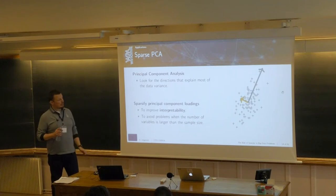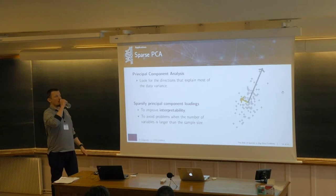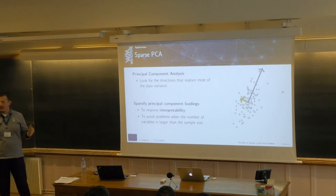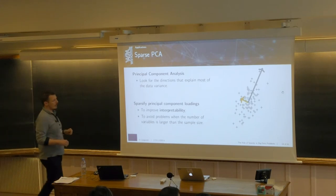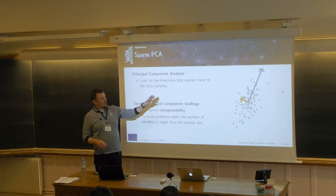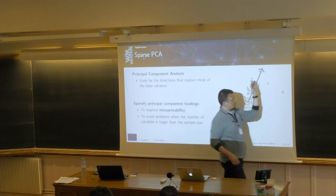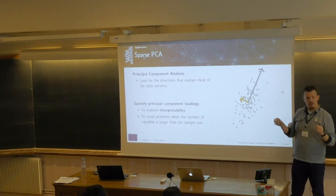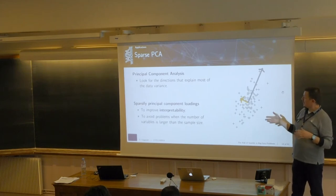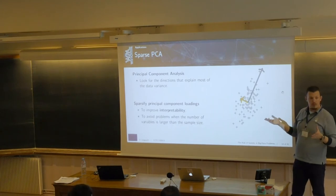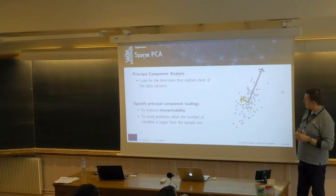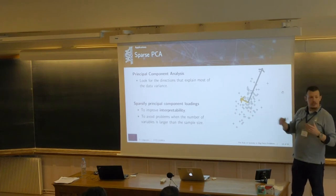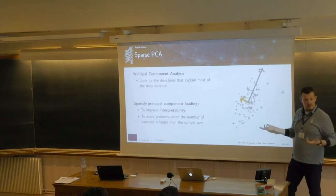Now let's look at another data representation. PCA is a way to explain the variance of our samples. Here the idea is to take principal component loadings that are sparse, meaning very few of their components are different from zero. This helps improve interpretability of results and is sometimes the only viable approach when the number of samples is too low compared to the dimension of the signal space.